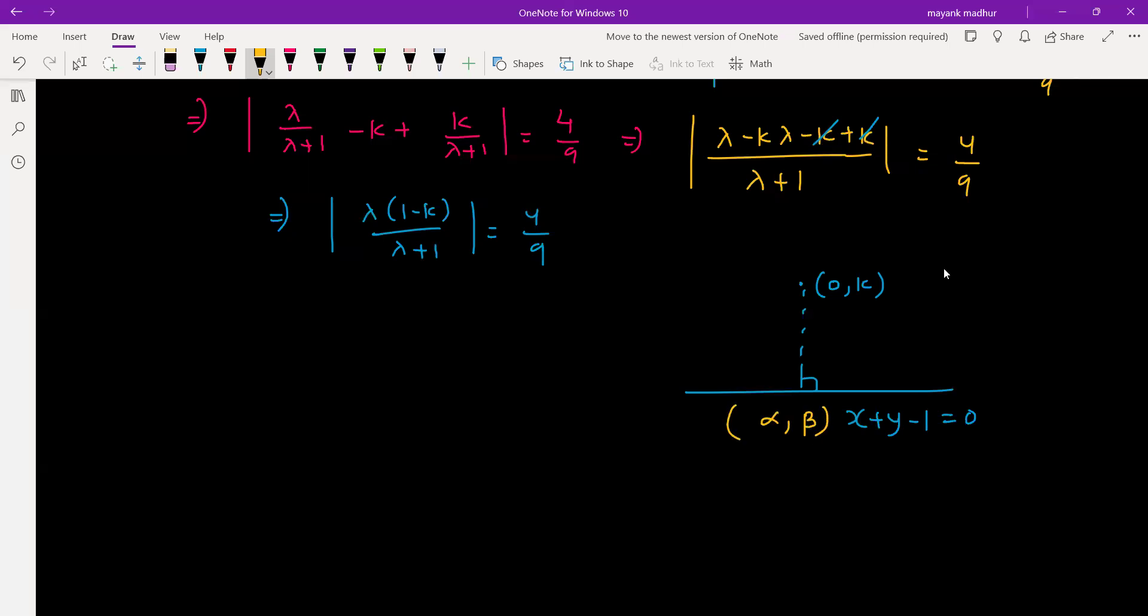Using the perpendicular distance formula: x coordinate difference alpha minus 0 by x coefficient, similarly y coordinate difference by y coefficient, equals negative of constant. From here, 2 alpha is equal to 1 minus k and 2 beta is equal to k plus 1.